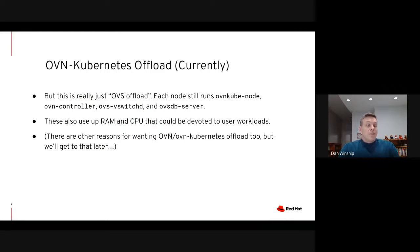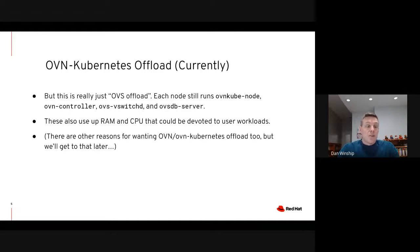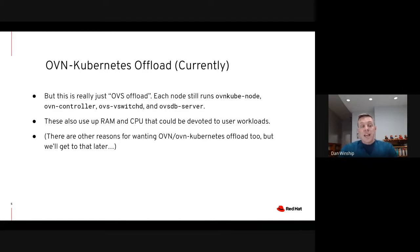And this is great, but it's really just OVS fast path offload. Each node still has to run the OVS slow path, which in turn means it needs to be running OVS vSwitchD. And then on top of that, each node also has to run OVN controller for OVN and OVN kube node for OVN Kubernetes. All these things are using up RAM and CPU that could be used for end user workloads instead. There are also some other reasons for wanting OVN Kubernetes offload, but we'll get to that later.